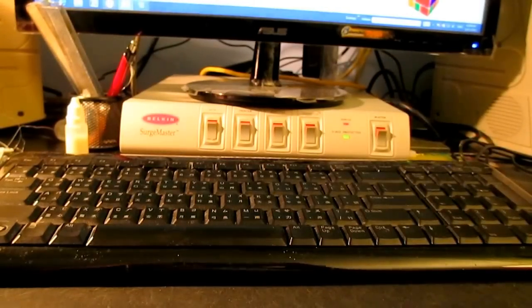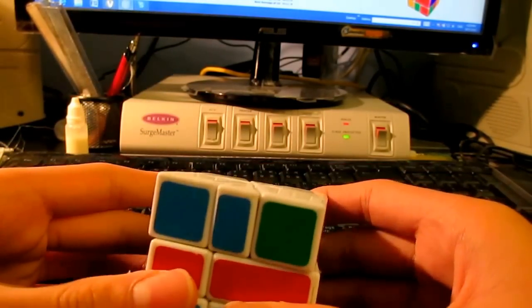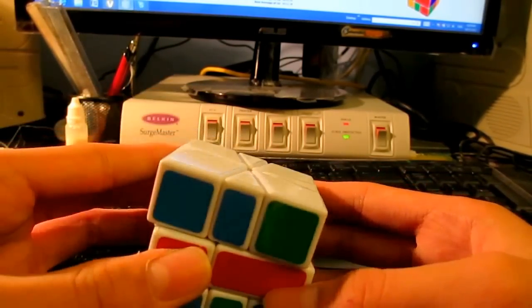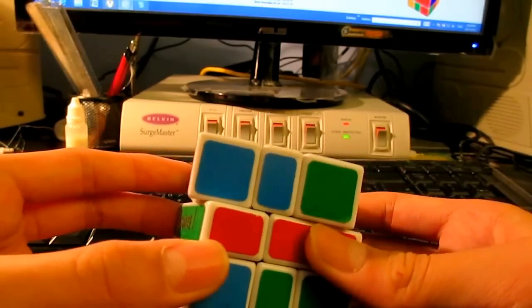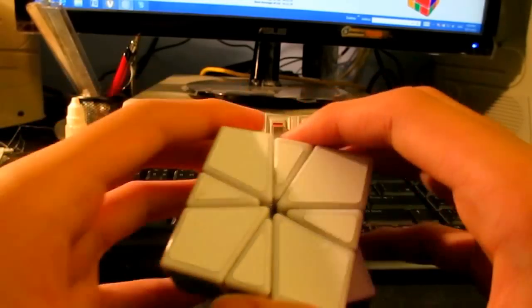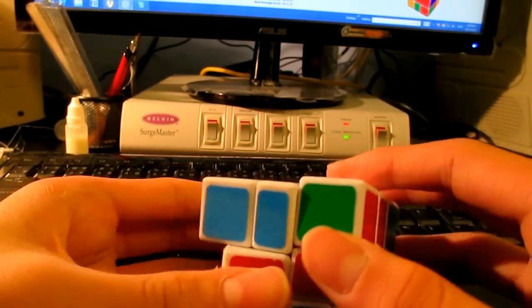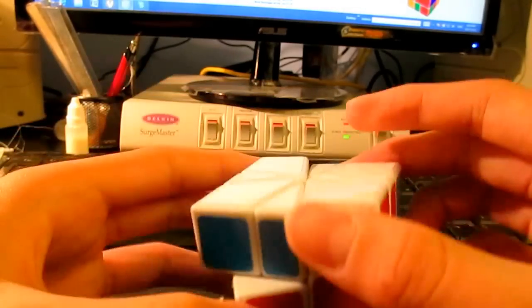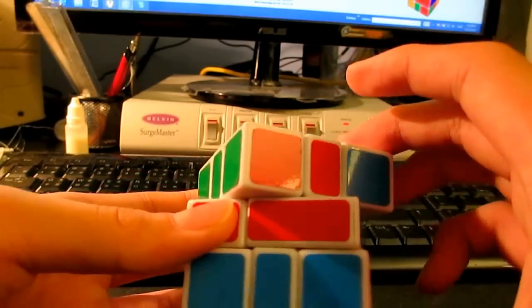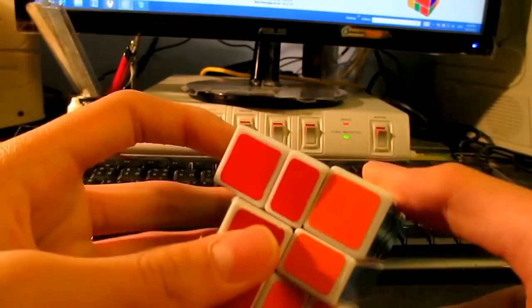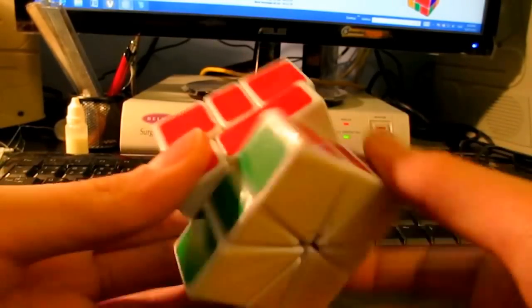What you could have done instead is I guess you could call like a corner permutation misalignments. So what you could do, you can misalign this, like this, so that these two blocks will be swapped. So like if you misalign this by one, you do the algorithm as normal. You have the solved layer and the solved cube.